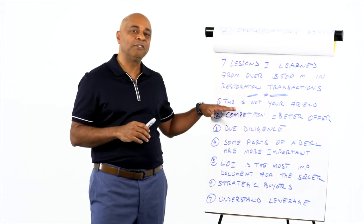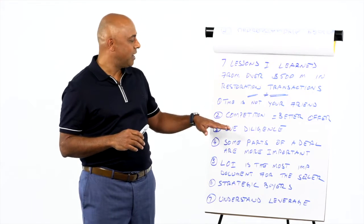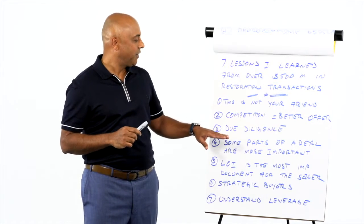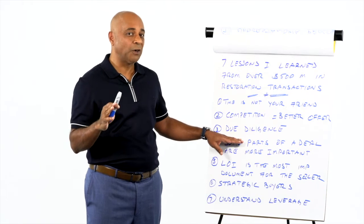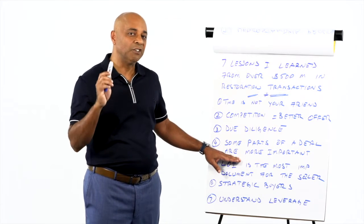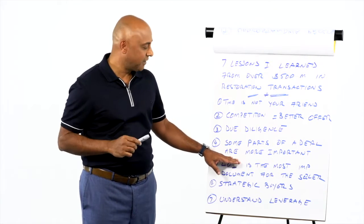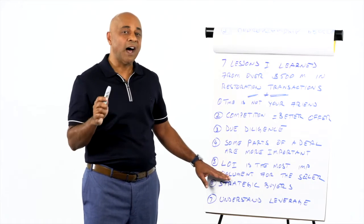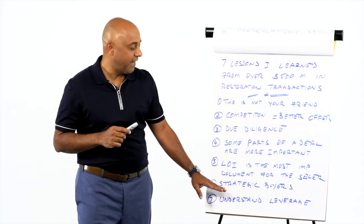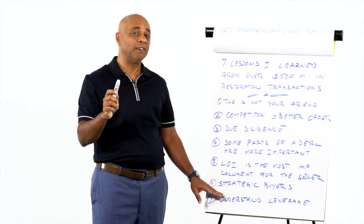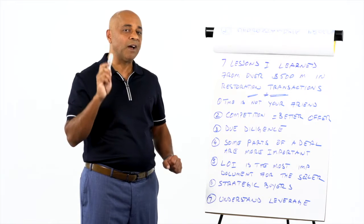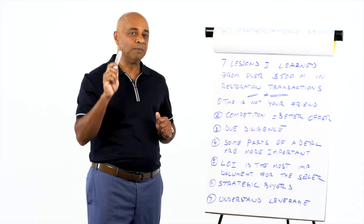Let's start with number one. Time is not your friend when you're trying to sell your business. Number two, the more competition you have, the better your offer and your terms are going to be. Number three, due diligence is not a chore, it is a necessity. Number four, some parts of the negotiation are more important than others. Number five, the LOI is the most important stage for a seller. Number six, strategic buyers will give you better offers than financial buyers. And last, number seven, understand leverage, understand the process, and when you as a seller has the most leverage in a transaction.